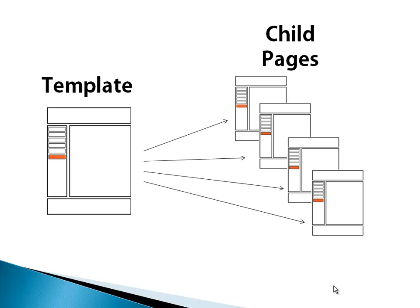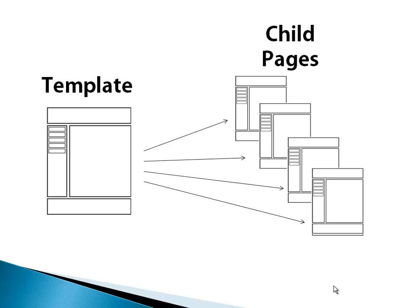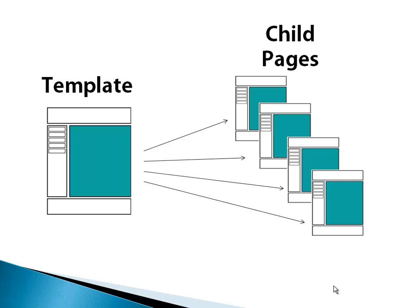What we need is a way to add custom content to each page, and this is done with something called editable regions. In the original template, you'll mark a div or some other area as being an editable region. All the child pages will inherit that editable region and allow you to put whatever you want into them. This allows you to create a segregation between the common elements of every page on your site and the things that are unique to each page. If you update the template, it will only update things outside of the editable regions. If you change content in a page's editable region, it won't affect your template.